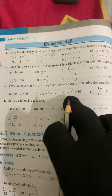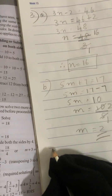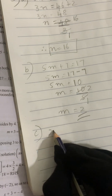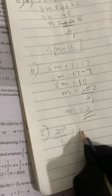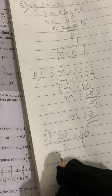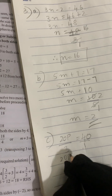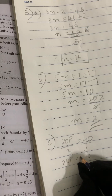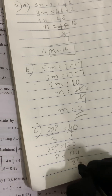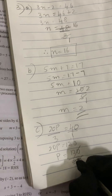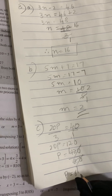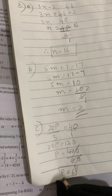Now let's solve the C question: 20p divided by 3 equals 40. There is nothing in the denominator on the right, so we put 1 there and do cross multiplication. 20p into 1 is 20p; 3 into 40 is 120. Take out p: p equals 120 divided by 20. Cancel the zeros — 2 ones are 2, 2 sixes are 12. Therefore p equals 6 is our final answer.